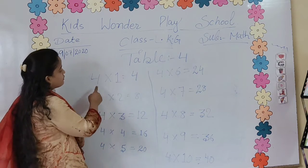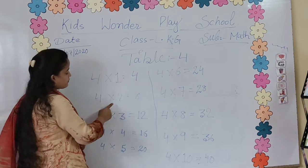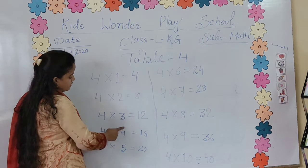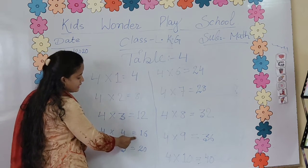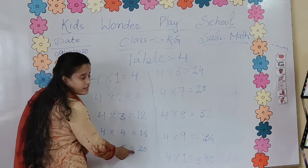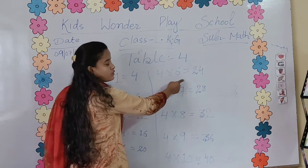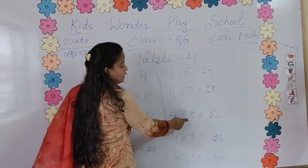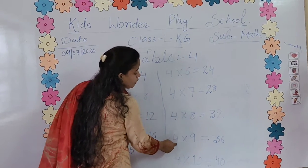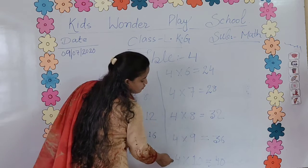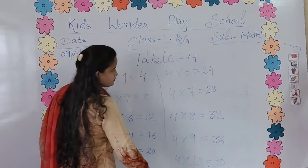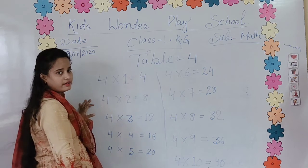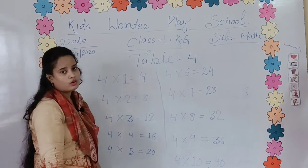Repeat again. 4's are 1's are 4, 4's are 2's are 8, 4's are 3's are 12, 4's are 4's are 16, 4's are 5's are 20, 4's are 6's are 24, 4's are 7's are 28, 4's are 8's are 32, 4's are 9's are 36, 4's are 10's are 40. Okay children, learn and copy me. Okay, thank you.